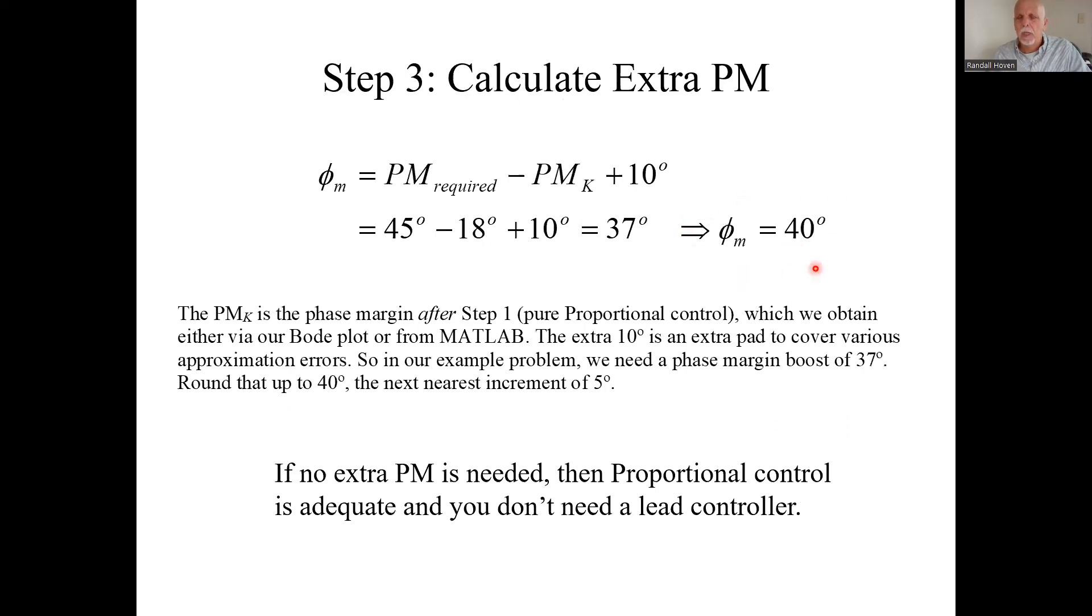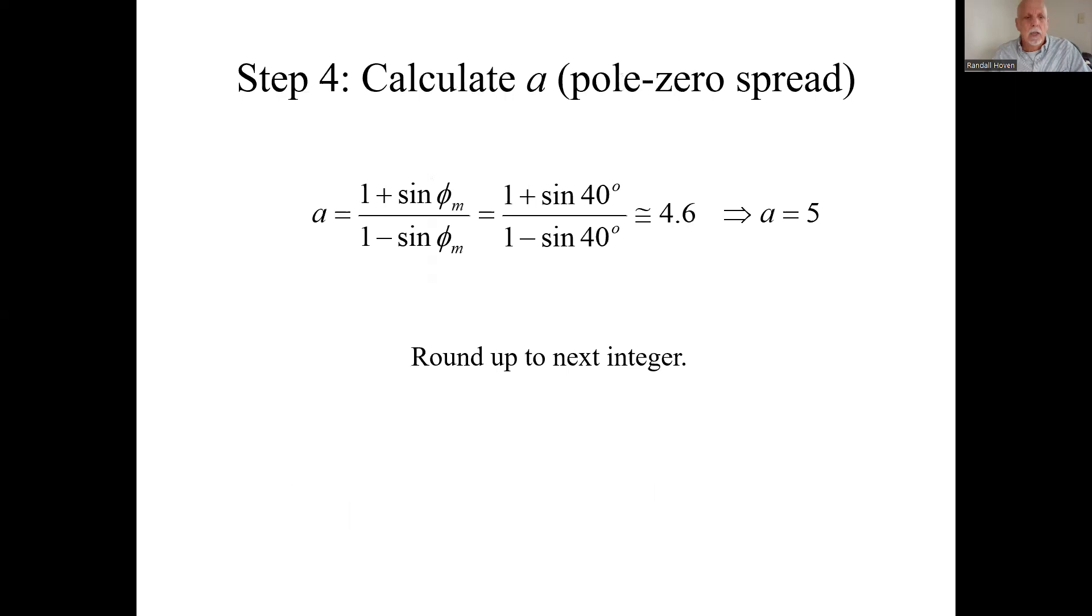Bump it up to the nearest five degrees so we get our phi sub m of 40 degrees. That's how much the controller needs to add. And from there we can calculate a from another formula. Plug it into this formula, I come up with 4.6.